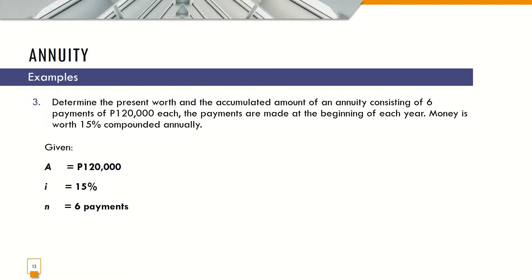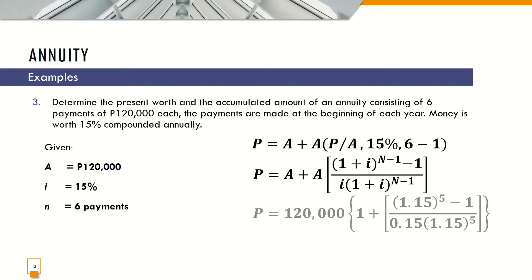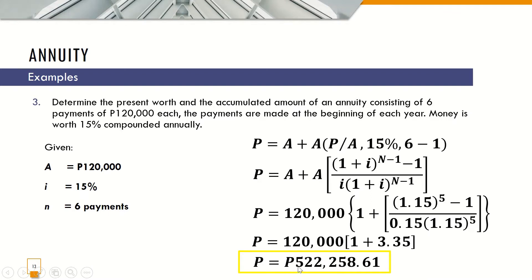For the third example, determine the present worth and the accumulated amount of an annuity consisting of 6 payments of 120,000 each. The payments are made at the beginning of each year, so Annuity Due again. Money is worth 15% compounded annually. Using the same formula in finding for P given A, A is 120,000 times 1 plus 1.15 raised to 5 minus 1, all over 0.15 times 1.15 raised to 5. This quantity will result to 3.35. P equals 522,258 pesos and 61 centavos.